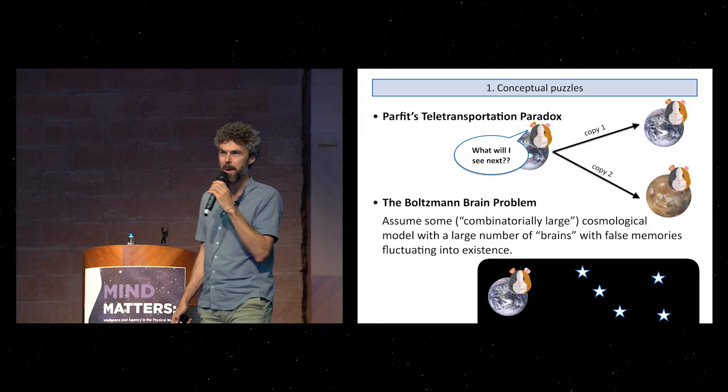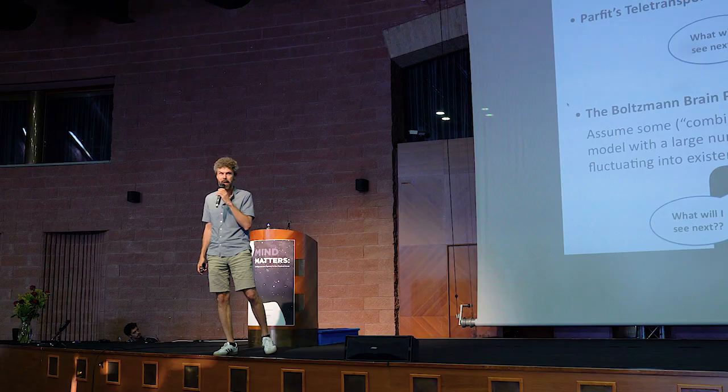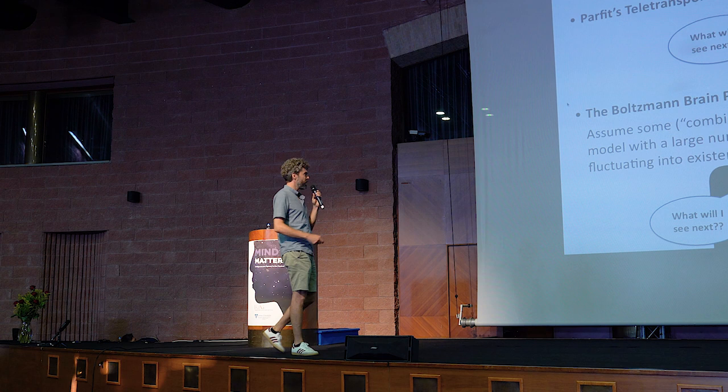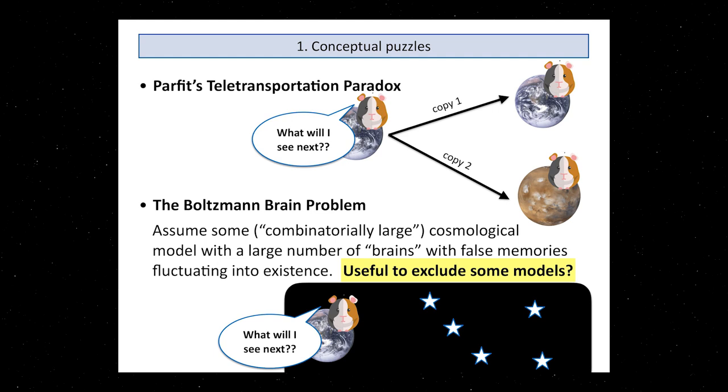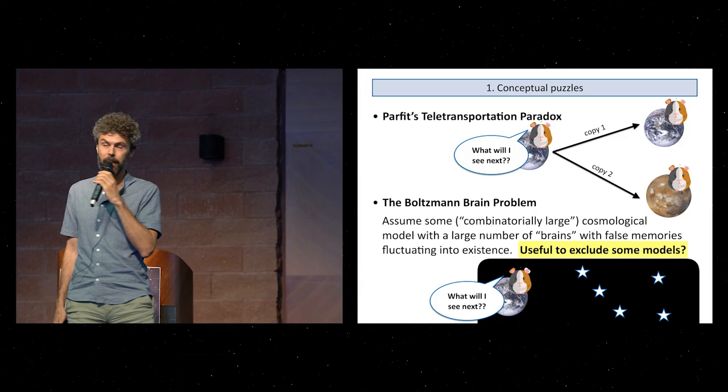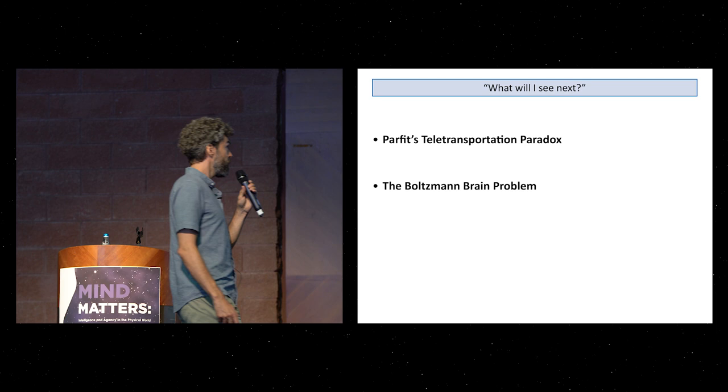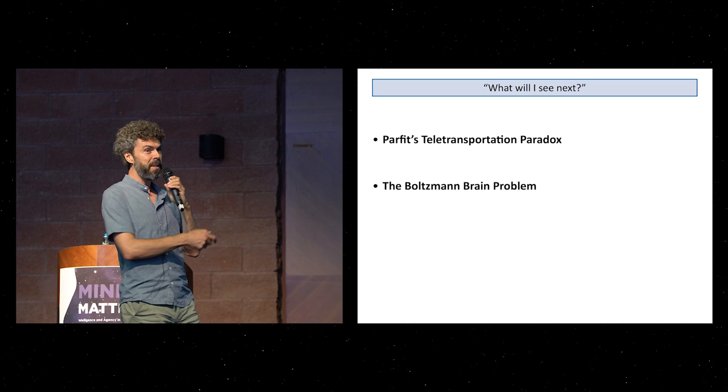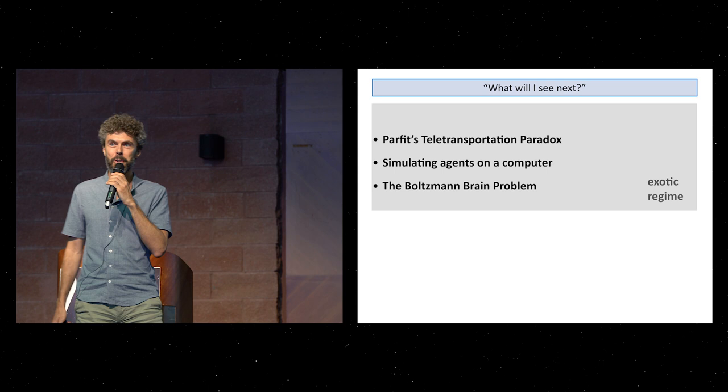You may ask, are you actually one of them? What should you think that you will see next? Could you assign a probability to making this strange observation? Some cosmologists would say this is interesting because it can assign a probability and we don't see that. Maybe that's a way to rule out some cosmological models. These are two puzzles about this first-person question, what will I see next, in some kind of exotic regime.